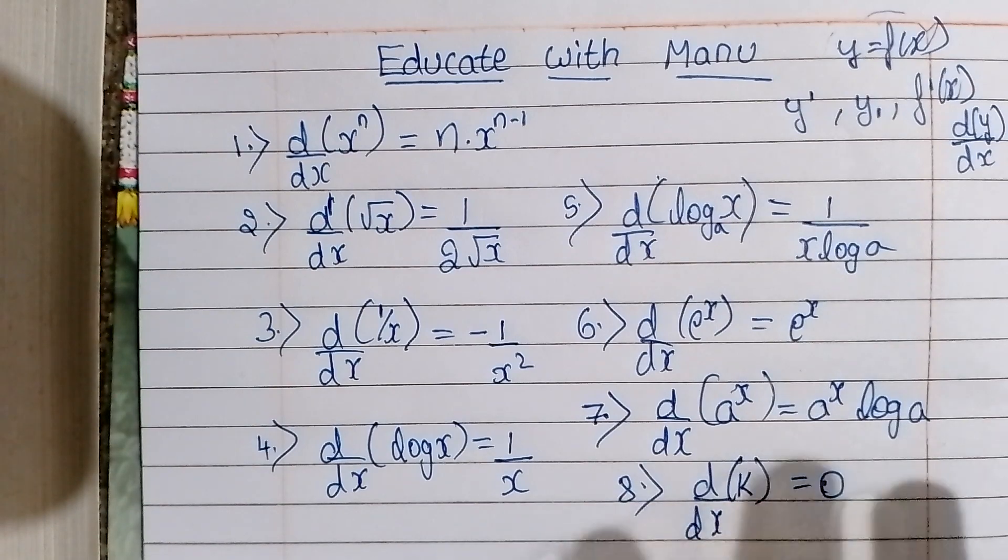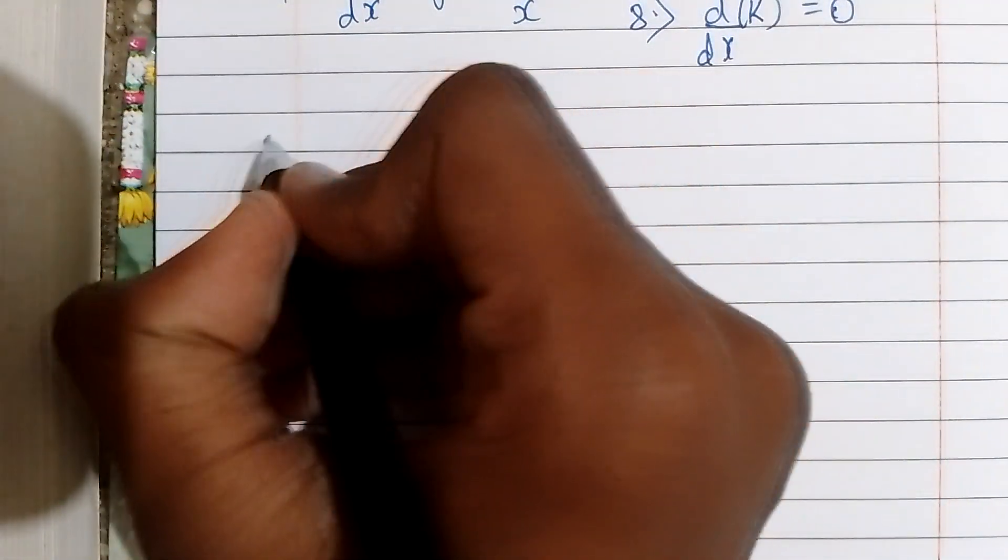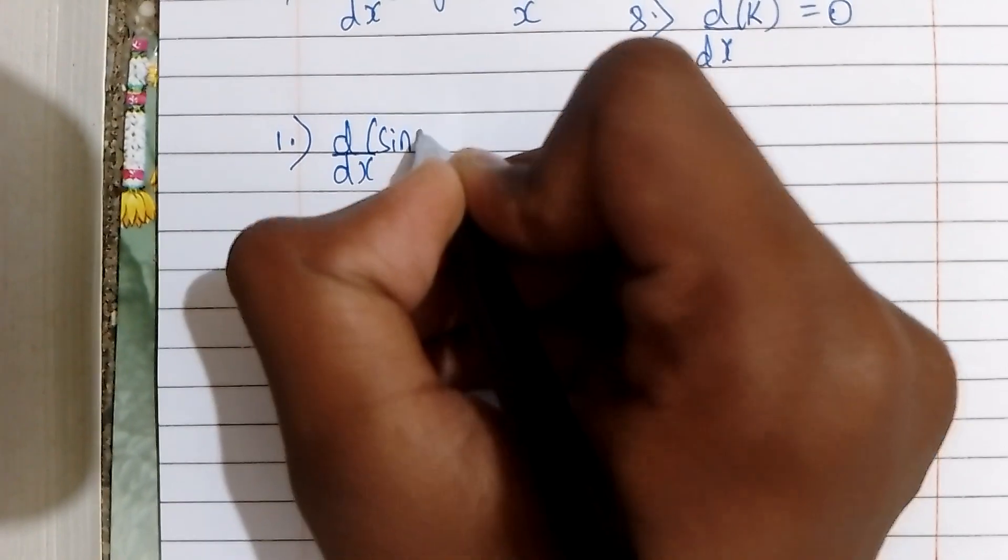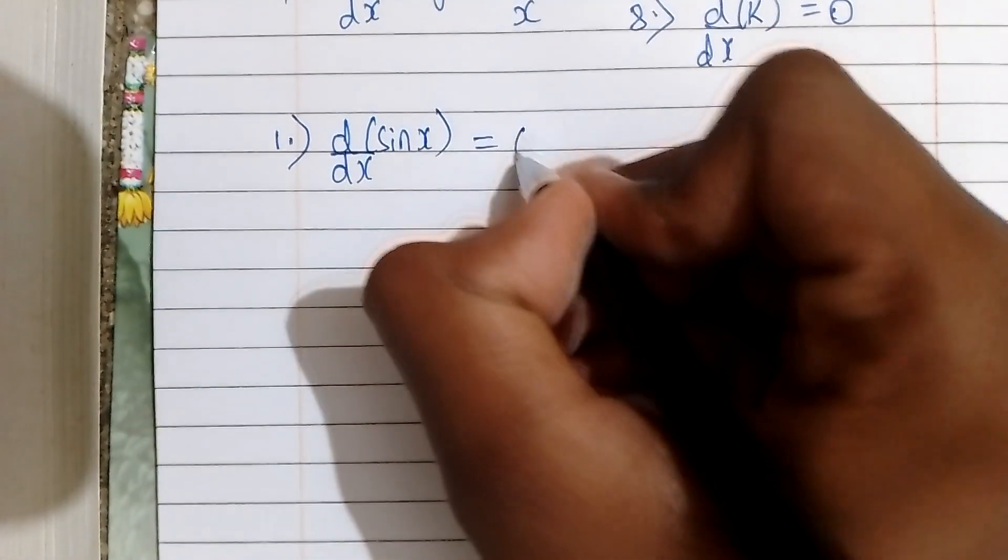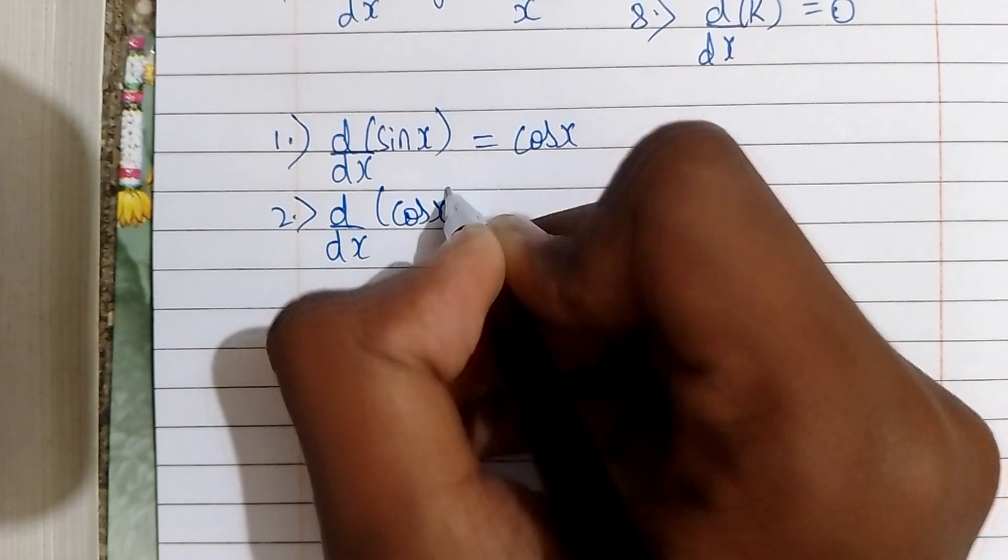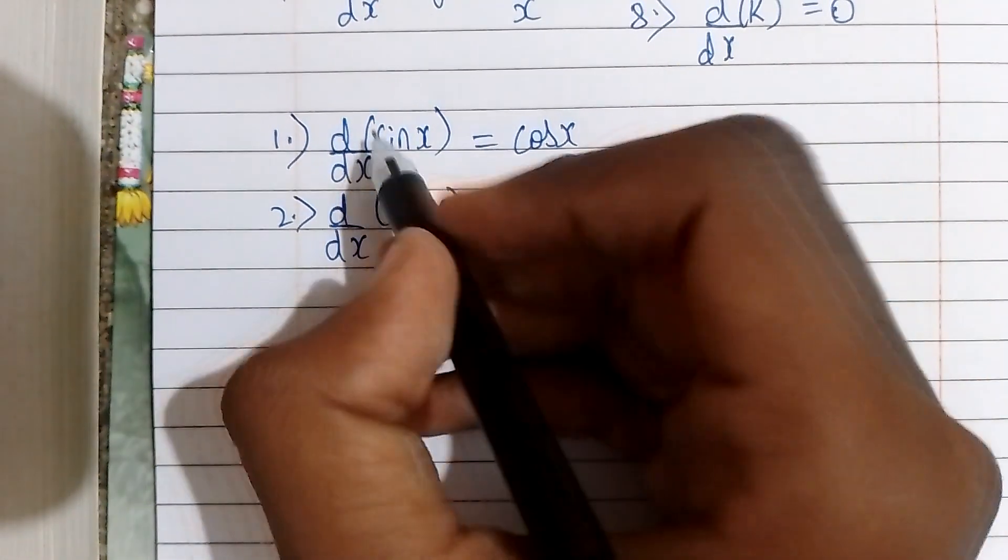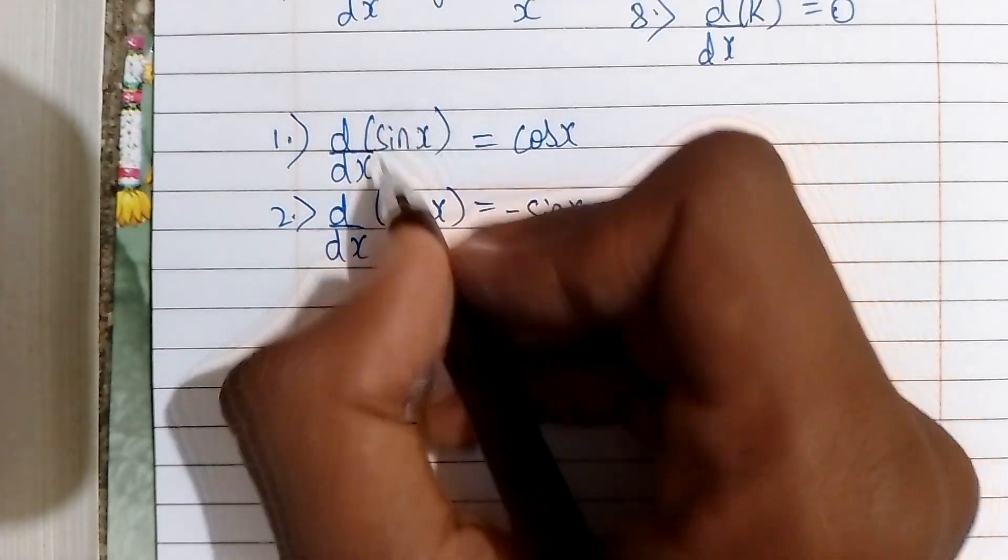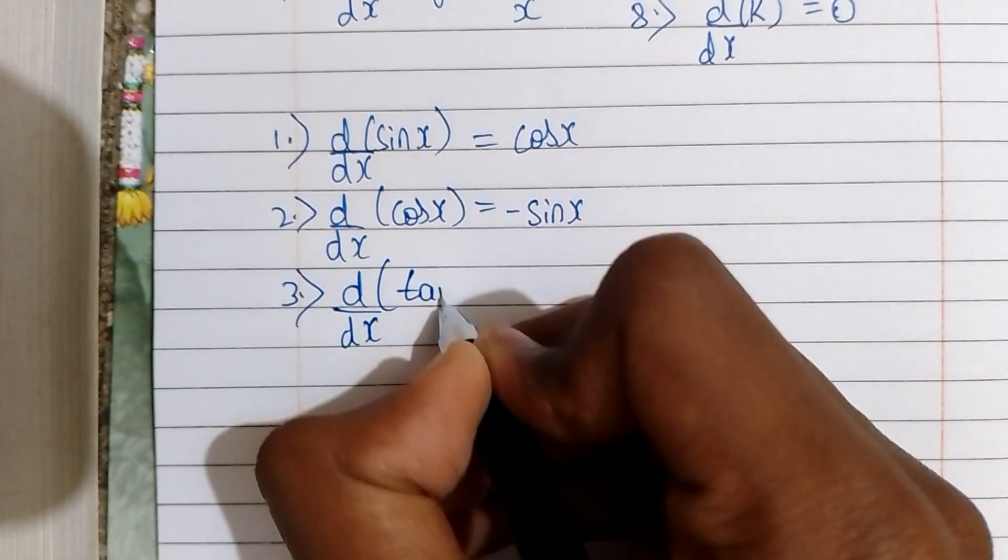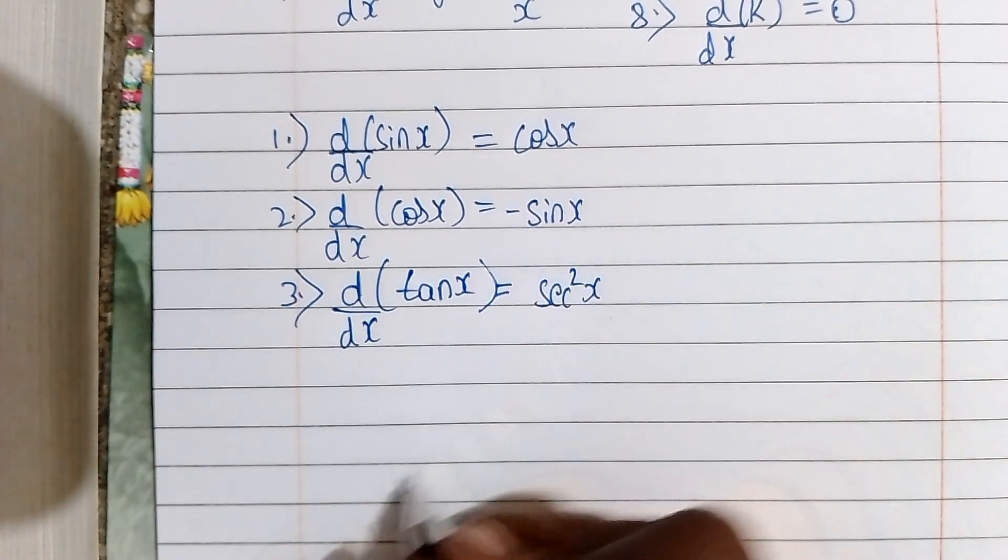Now let's look at the trigonometry formulas. d/dx of sin x, you can write cos x. d/dx of tan x is sec² x.